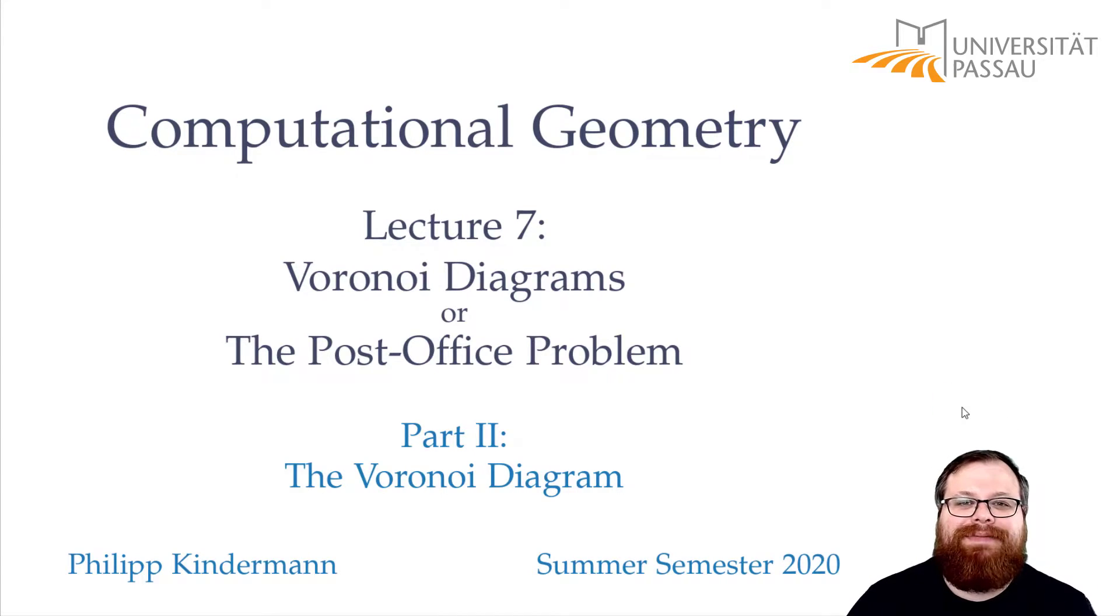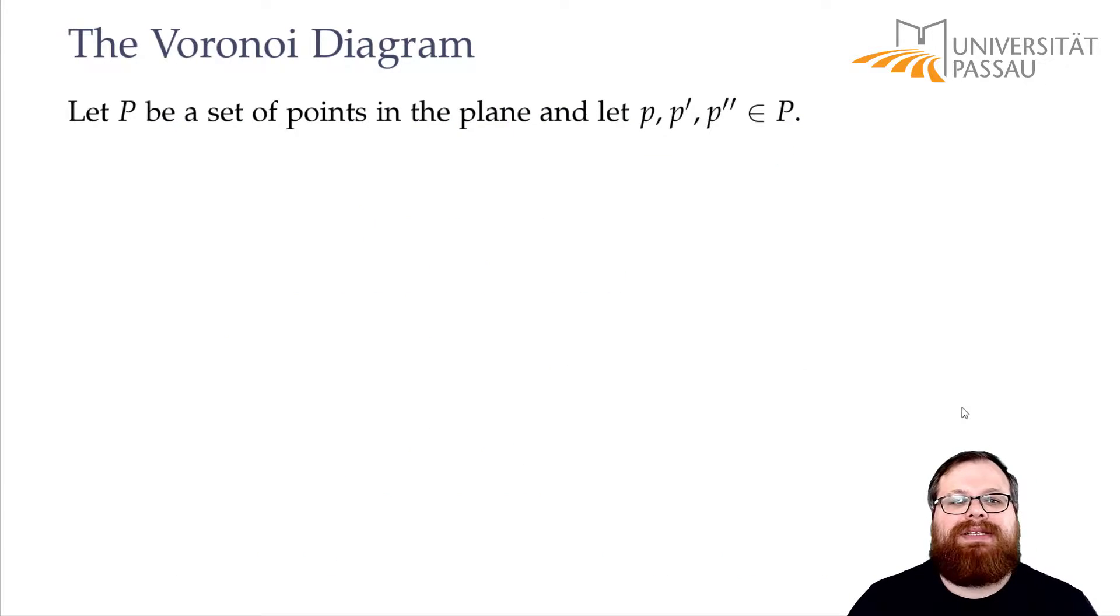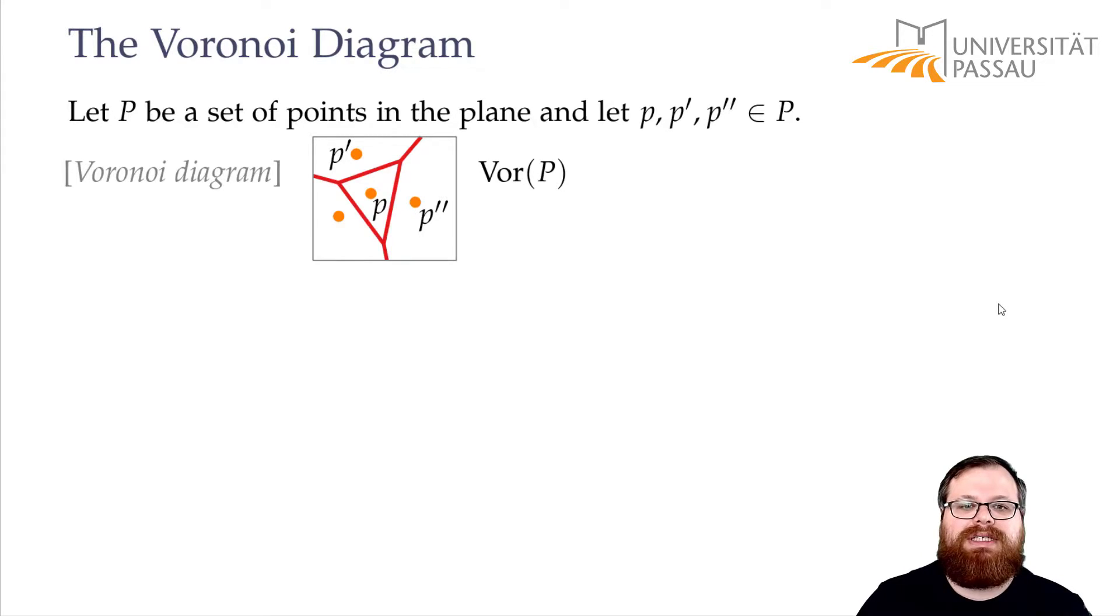We now want to formally define what the Voronoi cells, Voronoi edges, and Voronoi vertices are. Let's say we have a set of points P in the plane, and we take three points of it: P, P', and P''. We want to define the parts of the Voronoi diagram in terms of these three points.